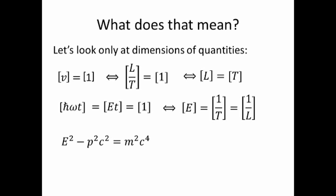Now consider the mass-energy relation E squared minus p squared c squared equals m squared c to the fourth. Setting c equal to one this tells us that an energy has the same dimension as momentum has the same dimension as a mass.